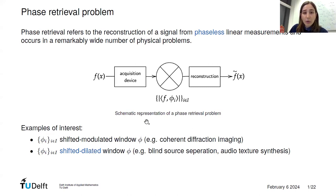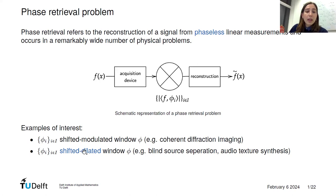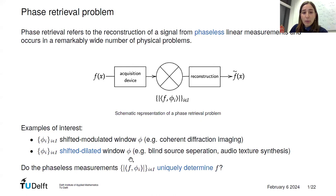There are two cases of interest. The first is when the family of functions is constructed by translating and modulating a fixed window φ — this is Gabor phase retrieval or phase retrieval for the short-time Fourier transform. Today we focus on the second case: when the family of functions is built by translating and dilating a fixed window called the wavelet φ, and we ask when and if it is possible to uniquely recover f from the absolute value of these scalar products.